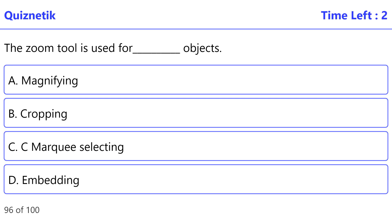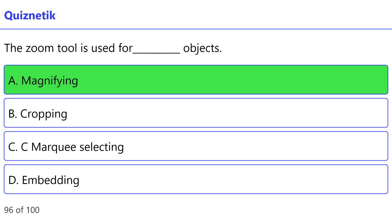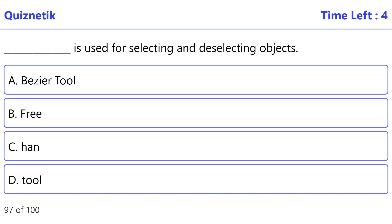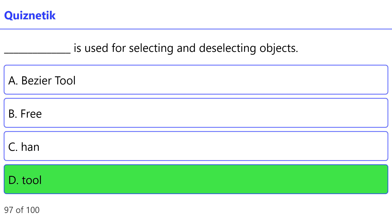The zoom tool is used for magnifying objects. The correct option is A. Magnifying. The tool used for selecting and deselecting objects — the correct option is the deed tool.